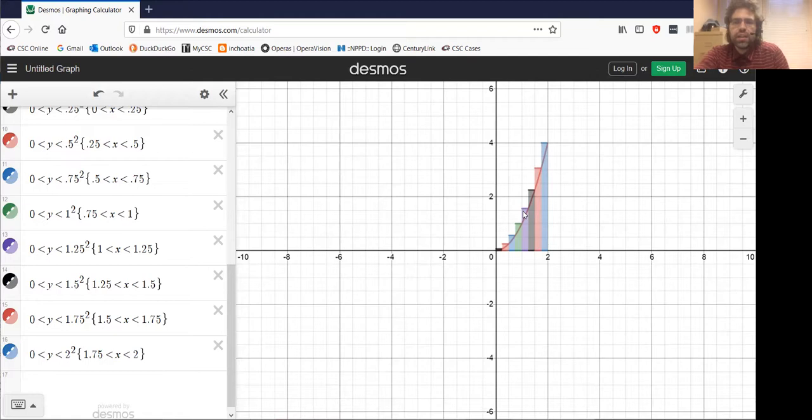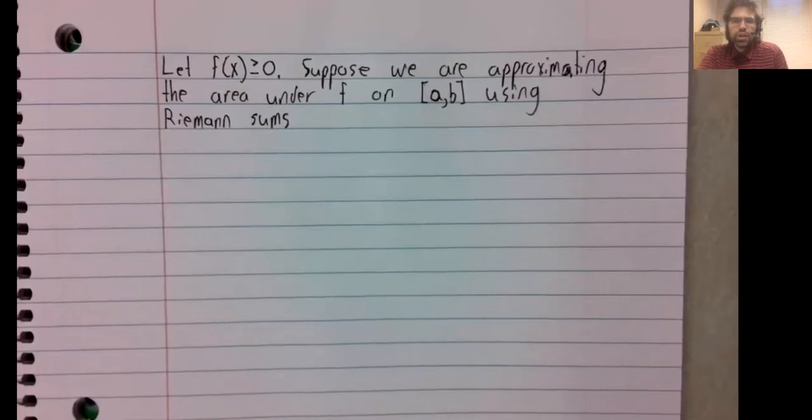We've seen the idea that we can take limits as things go to infinity. We are now going to float the idea that essentially, if we used an infinite number of rectangles, this approximation would become exact. So we've got this non-negative function on an interval, we are approximating the area under the curve using Riemann sums.